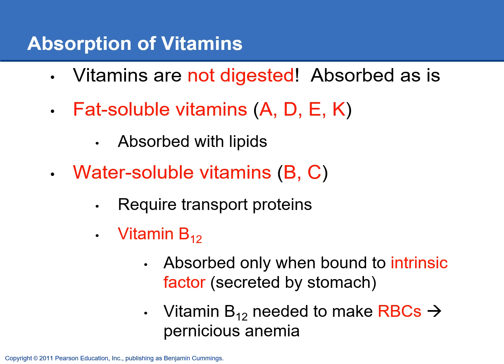Vitamins are not digested because they're small enough to be absorbed as-is. There are two groups: fat-soluble vitamins A, D, E, and K, which are absorbed the same way as lipids — they just diffuse right across the intestinal wall. Water-soluble vitamins, the B and C vitamins, are hydrophilic and require transport proteins to cross the small intestinal epithelial cells.